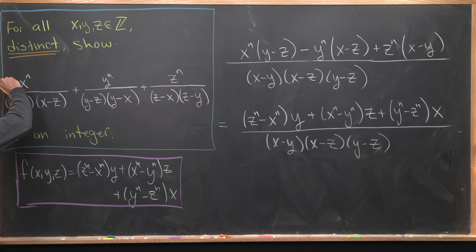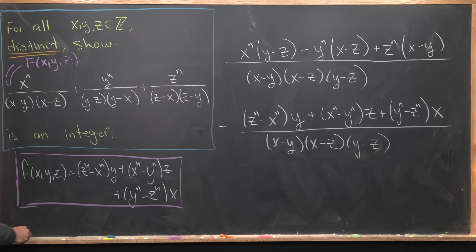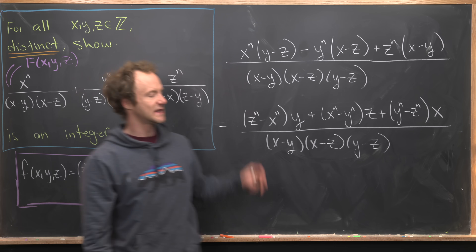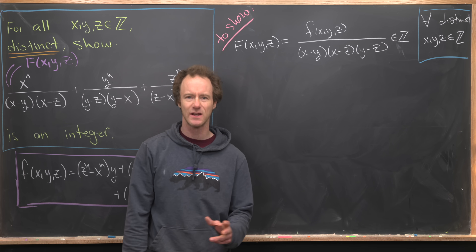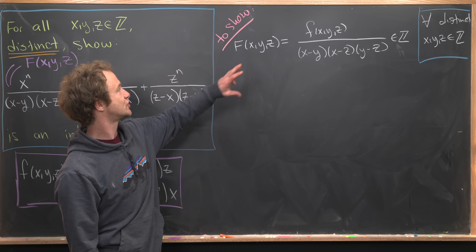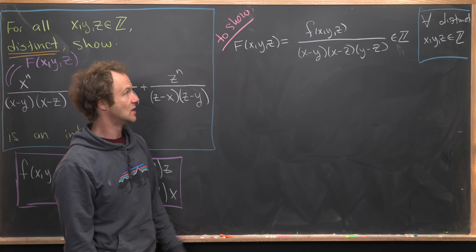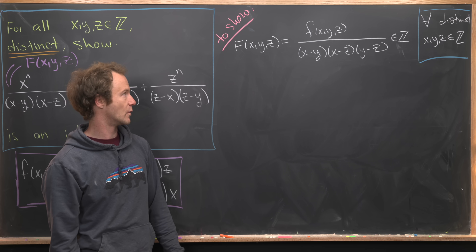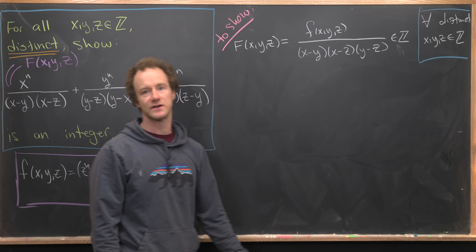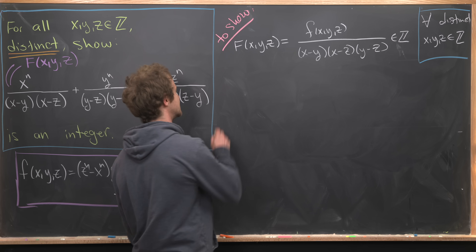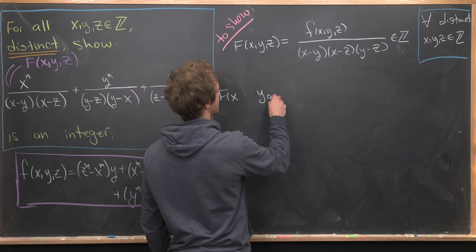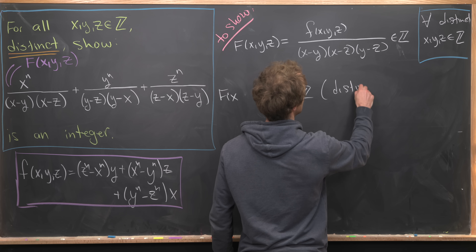I'll call the full rational expression capital F(x, y, z), equal to little f(x, y, z) over (x minus y)(x minus z)(y minus z). What we really want to show is that capital F(x, y, z) is an integer for all distinct integers x, y, z. To start, I'll fix two distinct integers y₀ and z₀ arbitrarily, and consider f(x, y₀, z₀) as a polynomial in x alone.